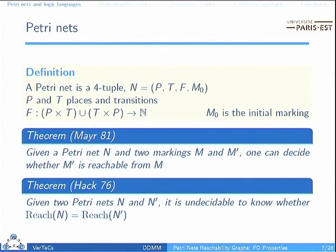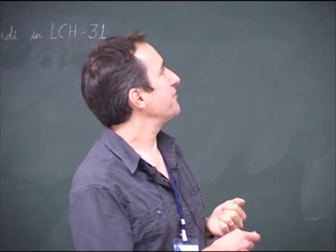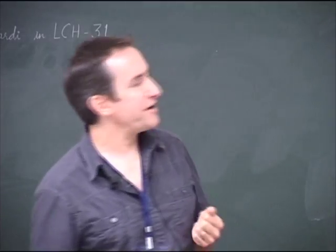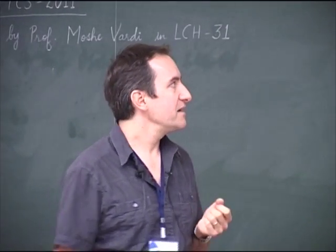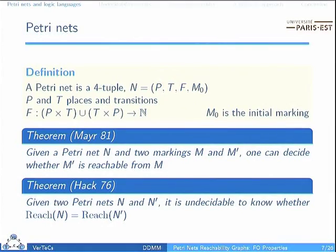A PetriNet may have a formal definition with a finite set of places, a set of transitions, and a function F which expresses how transitions behave relative to the places. An important component is the initial marking. There are two very important results — perhaps the most famous concerns the decidability of the reachability problem: given two markings, you are able to decide whether the second is reachable from the first in a PetriNet.